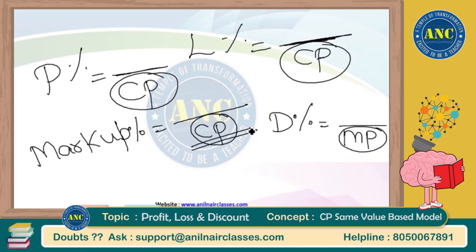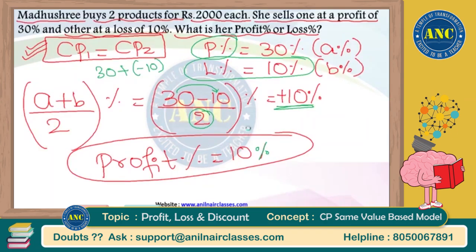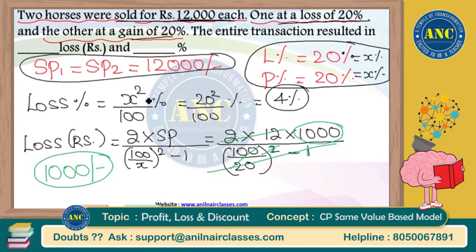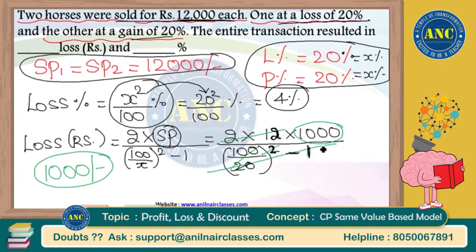Responding to students in the live chat: Madhuri Pratap, example 3 uses the third key point — selling prices of two products are same, profit and loss percentages are also same, both called X. The formula X² / 100 gives loss percent, and the rupee loss formula uses SP = 12,000 written as 12 × 1000. 100 / X = 100 / 20 = 5, 5² = 25, 25 − 1 = 24, which cancels with 2 × 12 = 24, leaving 1000 rupees.